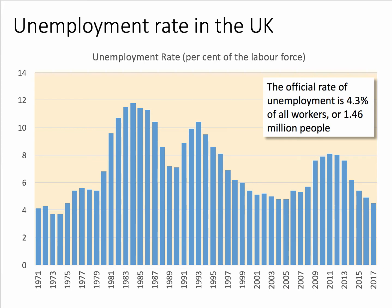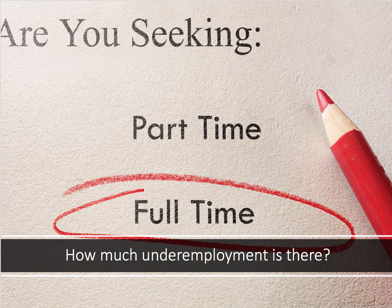The latest evidence from the Office for National Statistics is that the number of people who want more hours, or who have a part-time job and actually want a better job, is probably nearly double the official unemployment rate. The best definition of underemployment is when people are willing to supply more hours of work than their employers are prepared to offer. Underemployment occurs when people are counted as looking for either an extra job or searching actively in the labour market for a new job with longer hours to replace their current main job.